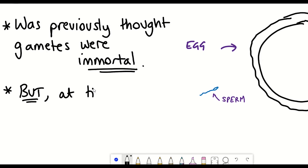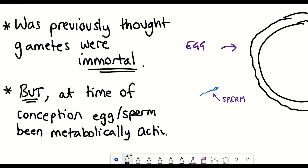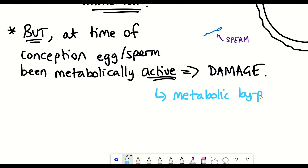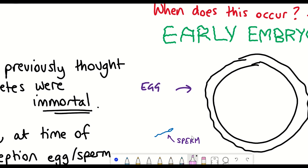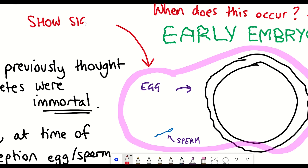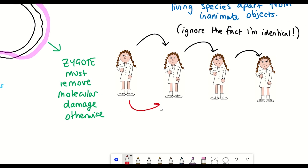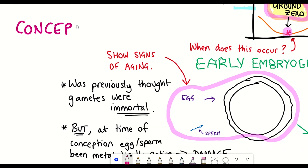However, considering the time of conception, the human germline has been metabolically active for two or more decades and during that time must have accumulated some damage, whether through metabolic byproducts, genetic mutations, or modified proteins. So whilst gametes may appear biologically younger than other tissues, they still show signs of ageing. Therefore, for new life to begin in the same young state as the previous generation, the zygote must somehow remove this damage. Therefore, conception is not ground zero.